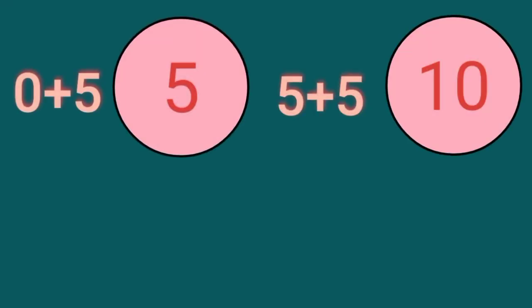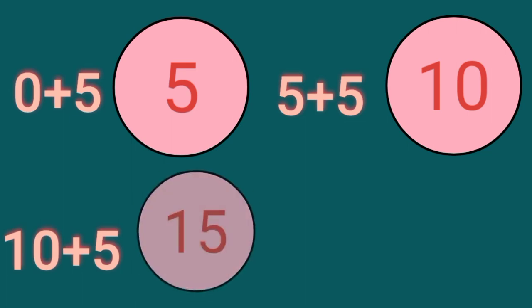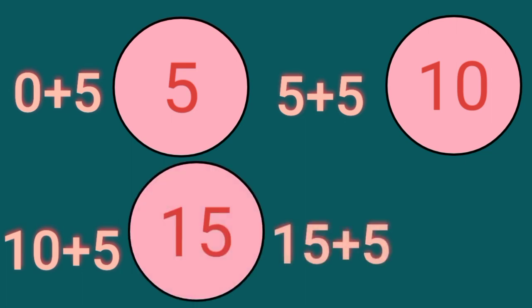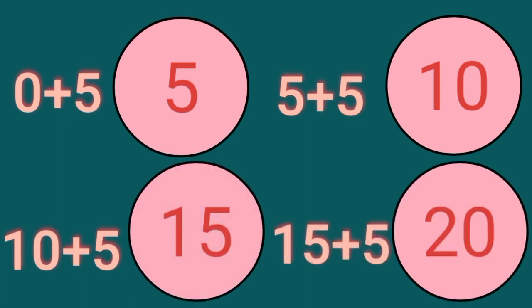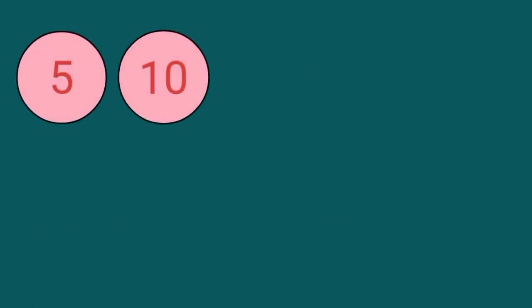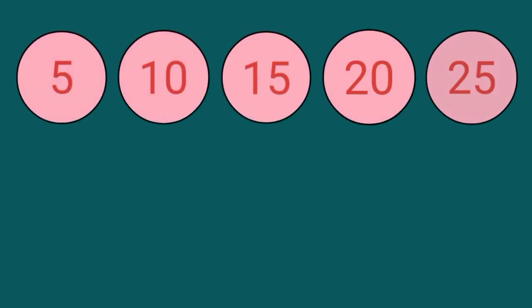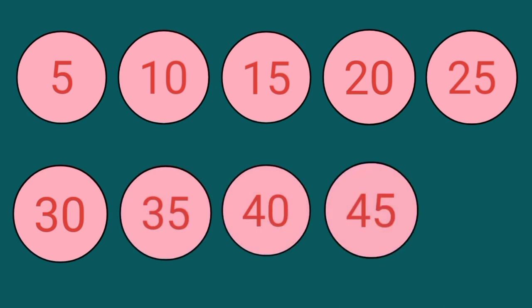5 plus 5 is 10, 10 plus 5 is 15, and 15 plus 5 is 20. The pattern goes 5, 10, 15, 20, 25, 30, 35, 40, 45, 50, and so on.